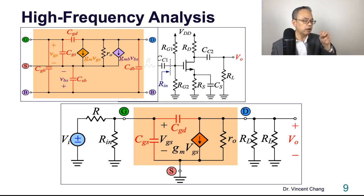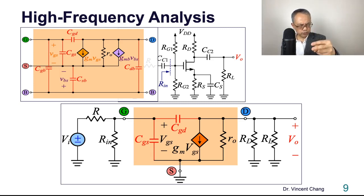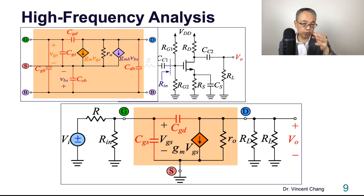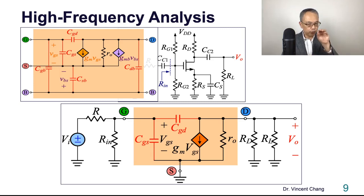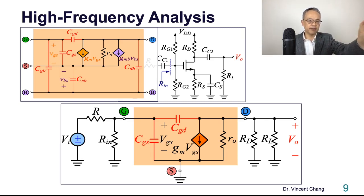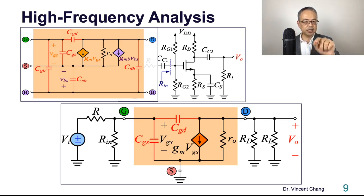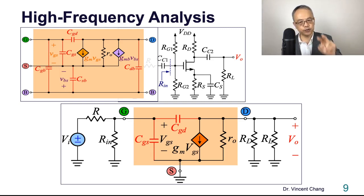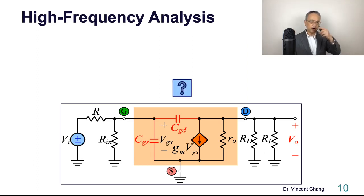One of the key lessons you will learn is the Miller theorem, which I believe will be in lecture three. This is lecture one — common source high frequency; lecture two — open circuit time constant; lecture three — Miller theorem. Based on the Miller theorem, you will learn that CDB is not important, so it is totally fine to neglect it. So the high frequency equivalent circuit for the common source amplifier only considers two capacitors: CGS (gate to source) and CGD (gate to drain).